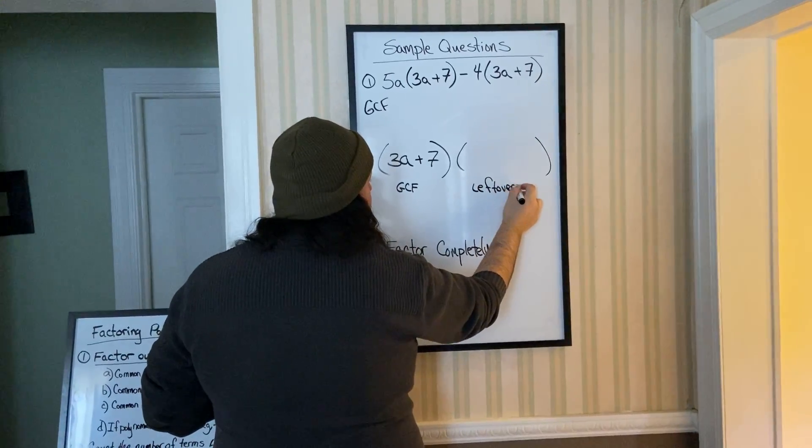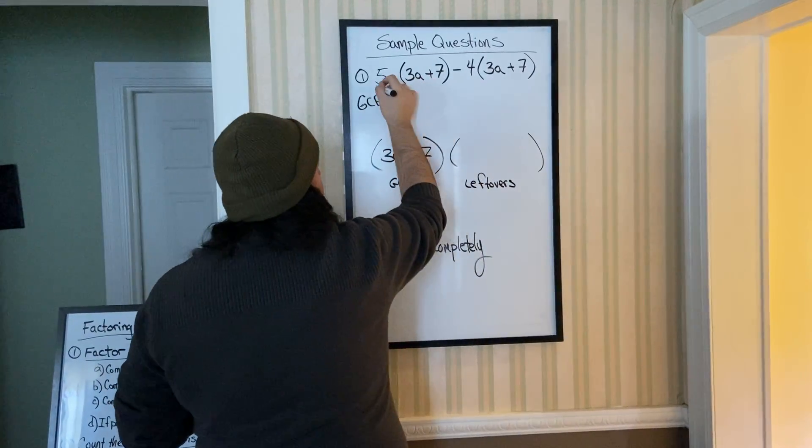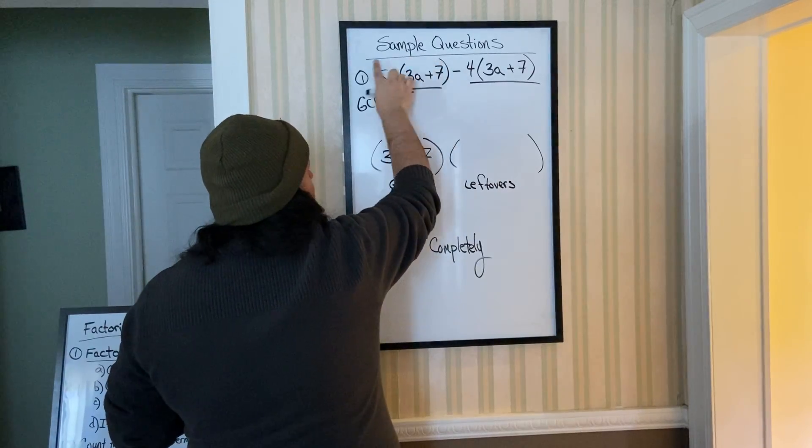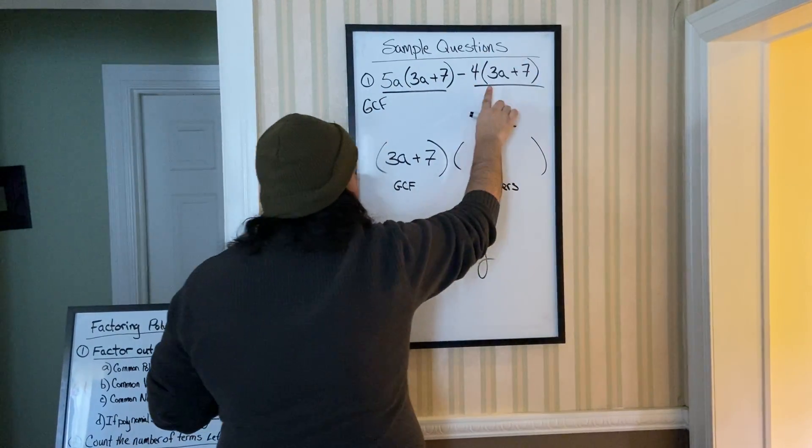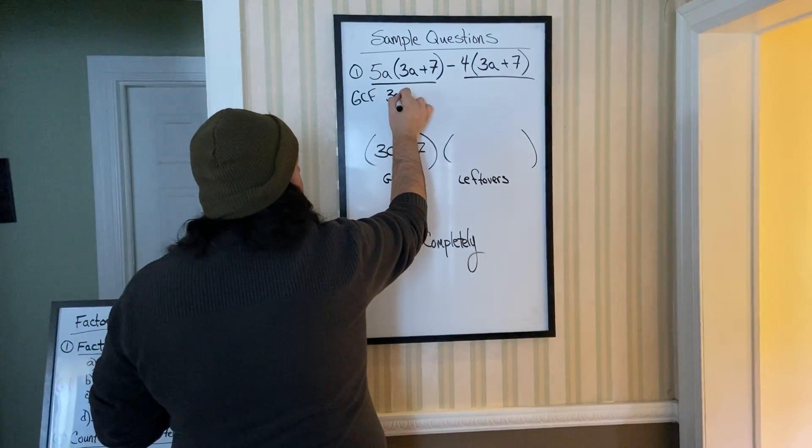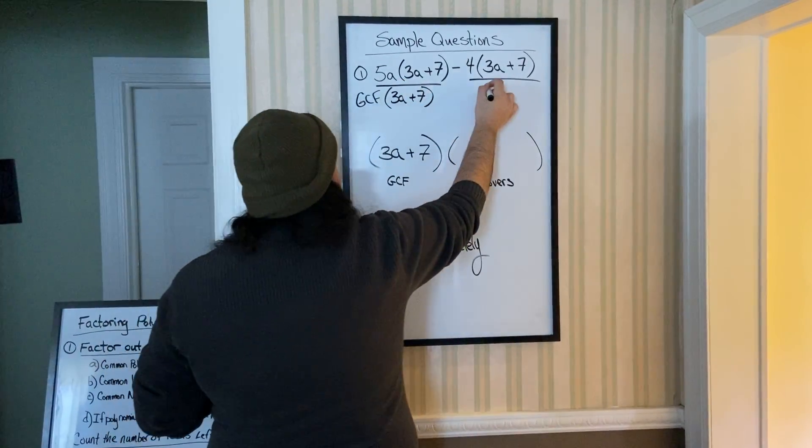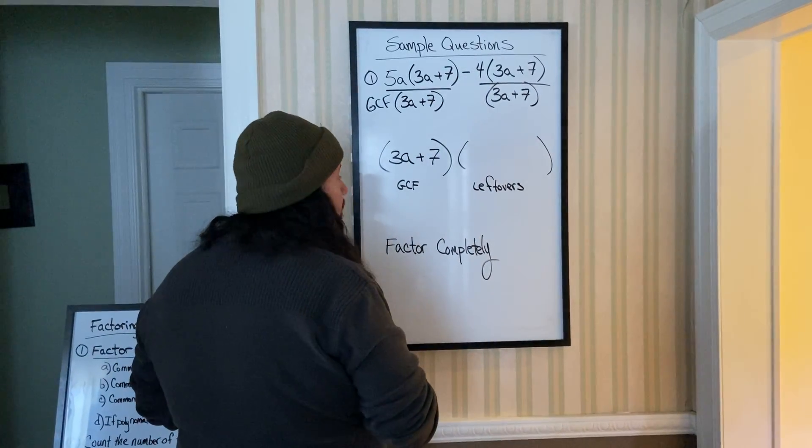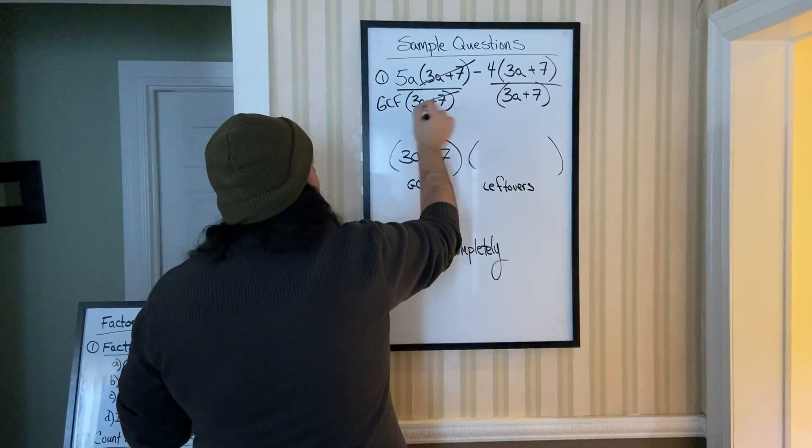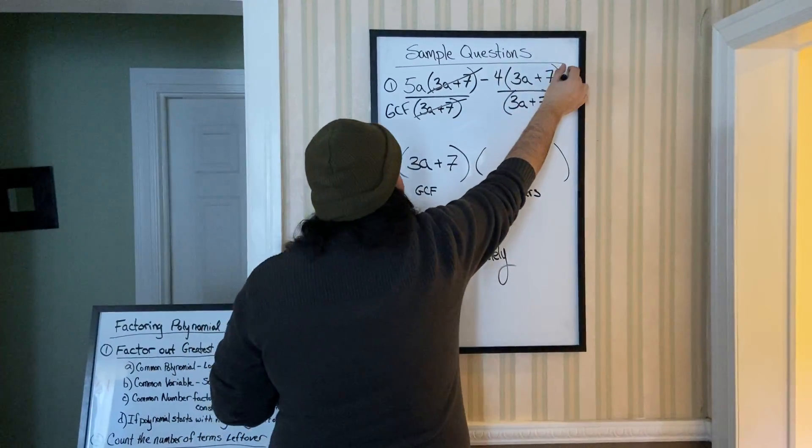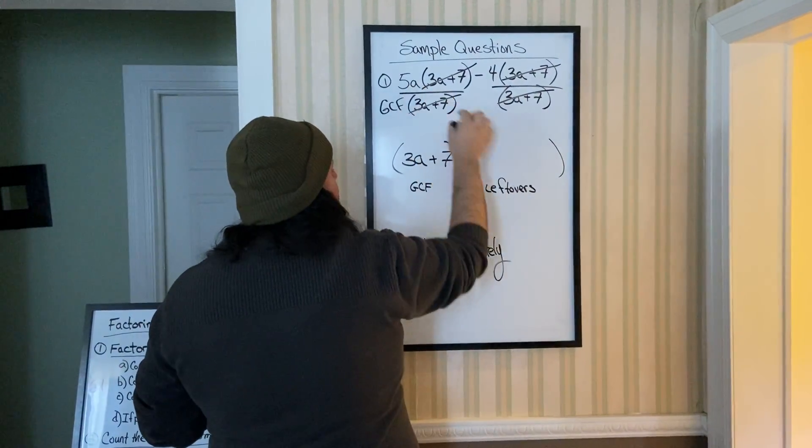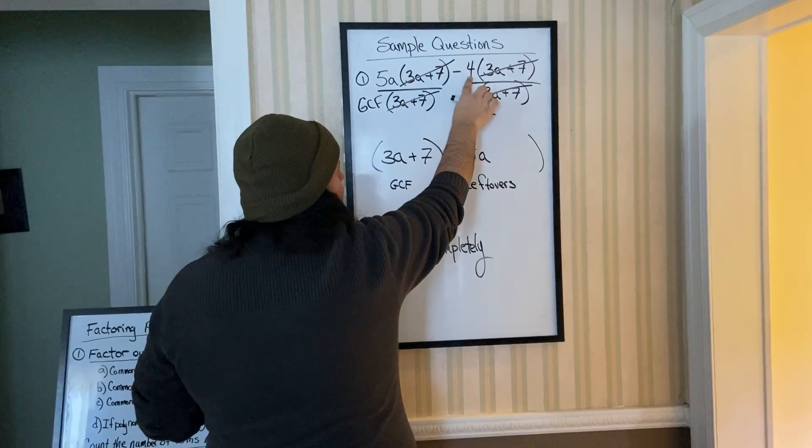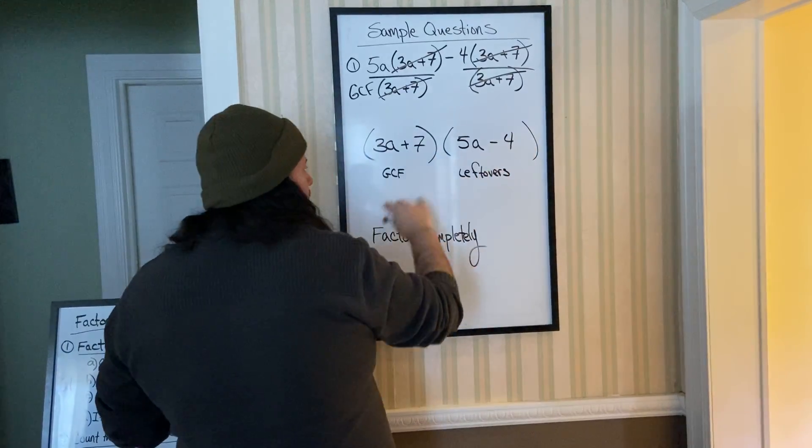To get our leftovers, take each of these terms. Because this is in parentheses, these don't separate terms. This is one whole item, this is your second item. Divide each one by your GCF of 3A plus 7. If you have matching parentheses on top and bottom, they cancel out altogether. So what's left over is 5A, and you bring the sign over, negative 4.